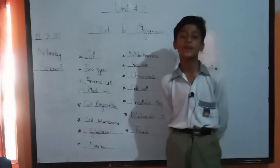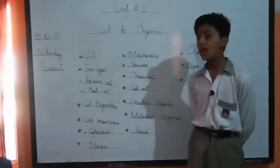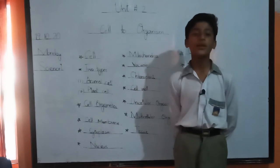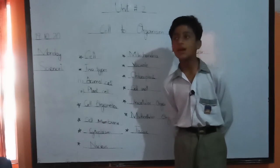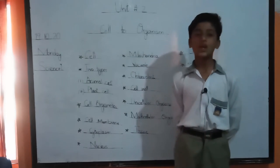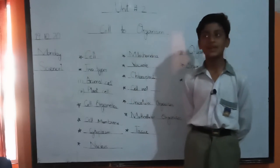Unicellular organism. Those organisms which are made up of one cell are called unicellular organisms. Like bacteria. Bacteria is an organism which is made up of one cell.